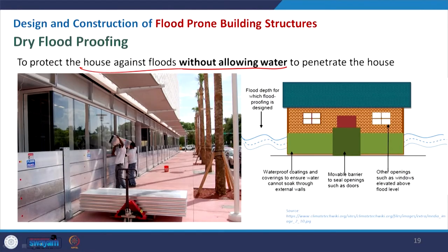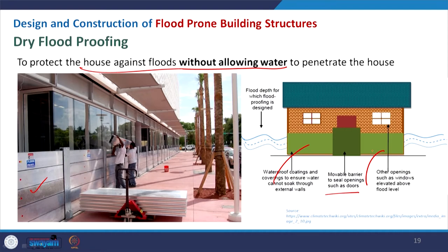Coming to dry flood proofing — this is basically to protect the house against flood without allowing water to penetrate. We make our building strong enough to resist the particular flow. We can use additional flood panels which will protect against the direct thrust of flood water towards the building. Doors and other openings are protected with a movable shield, which will be removed when the flood level reduces. So in this case we do not allow any water to penetrate — this is the dry flood proofing technique.